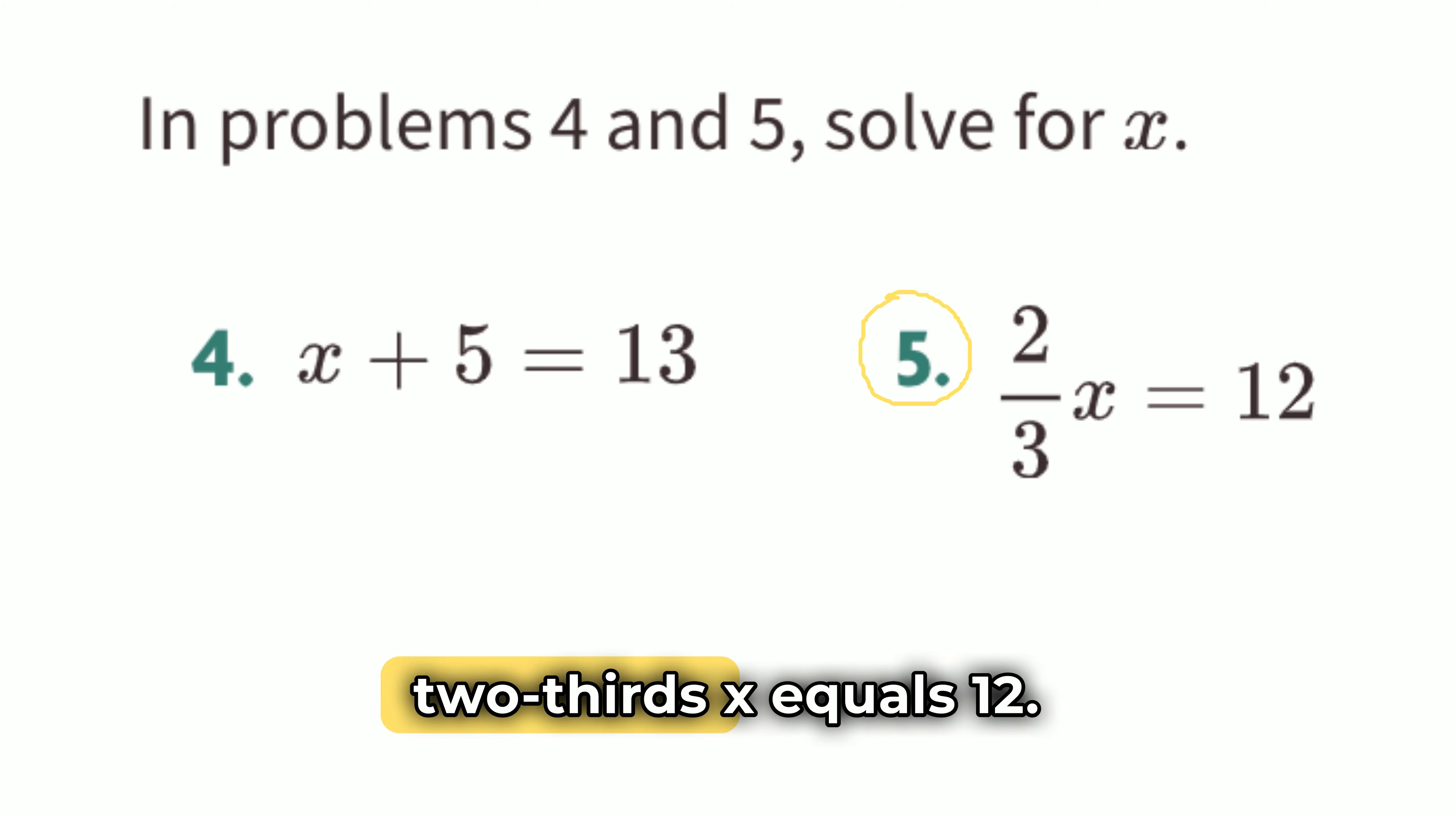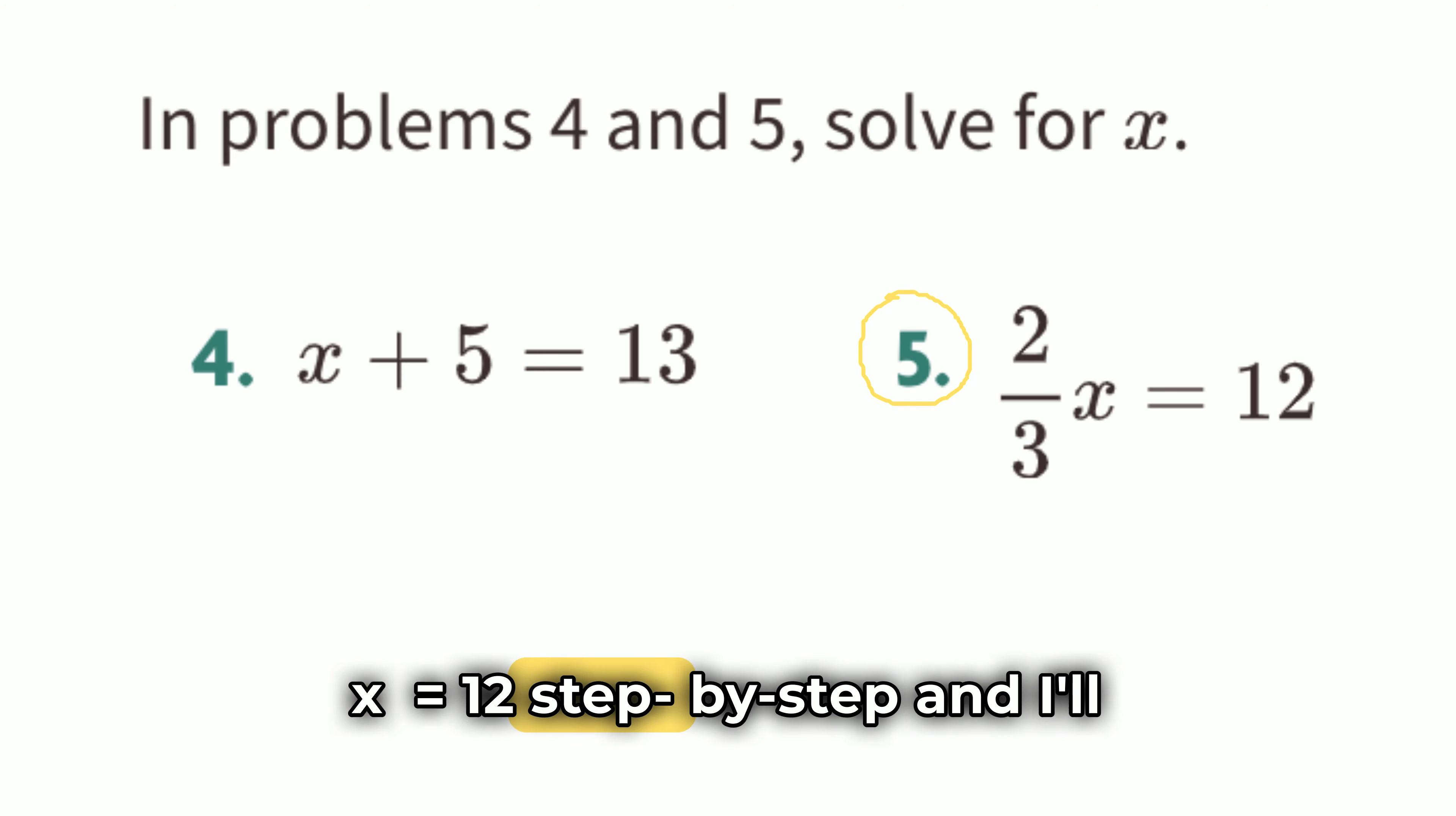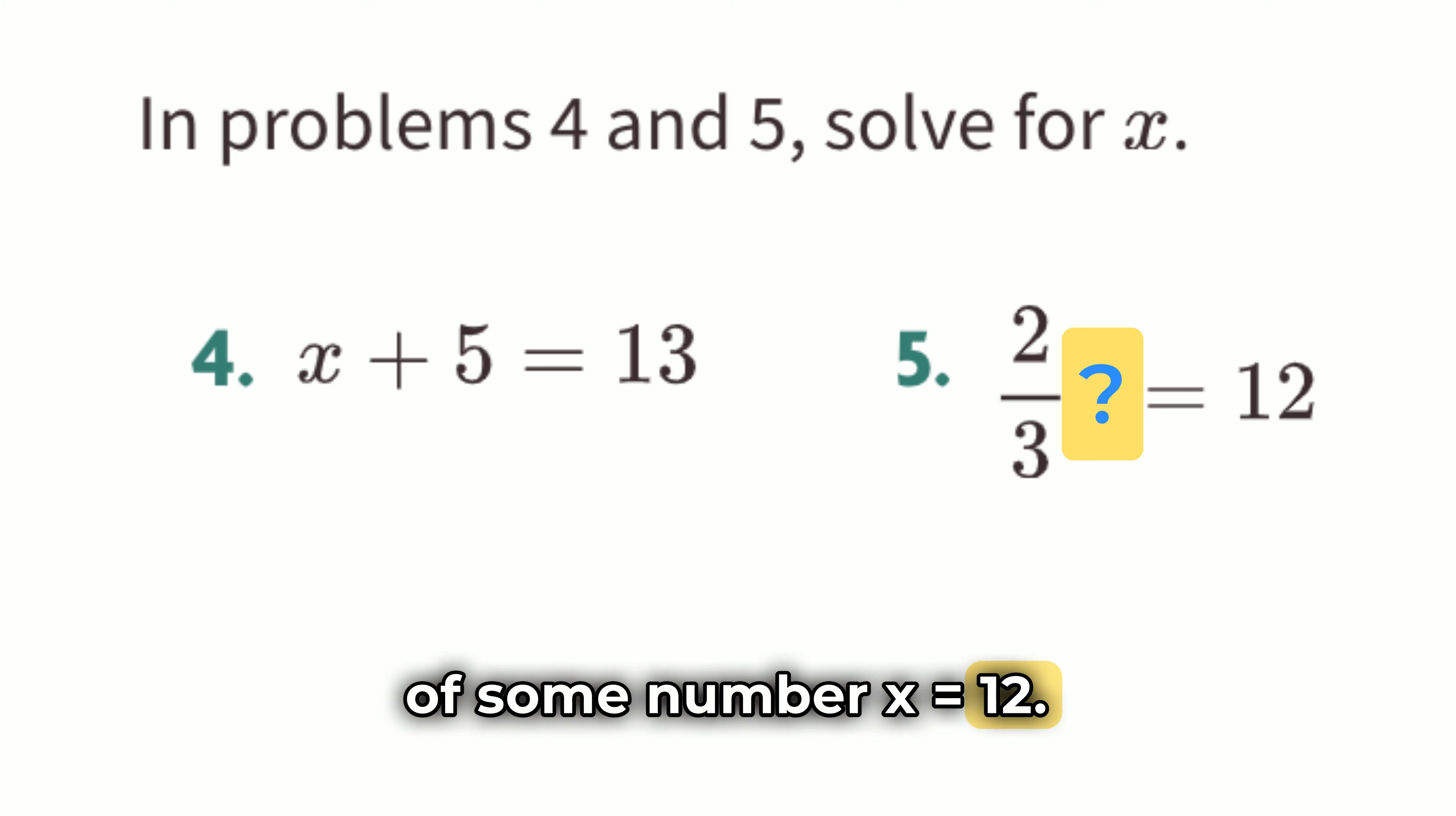Problem 5. 2 thirds x equals 12. Let's solve the equation 2 thirds x equals 12 step by step, and I'll explain each part clearly. Step 1. Understand the equation. The equation says that 2 thirds of some number x equals 12. Our job is to find what that number x is.